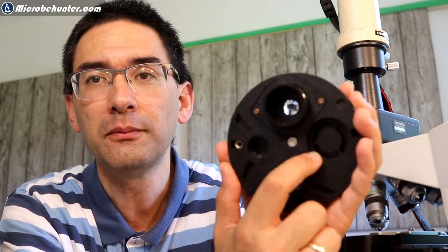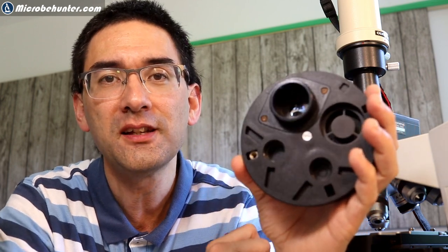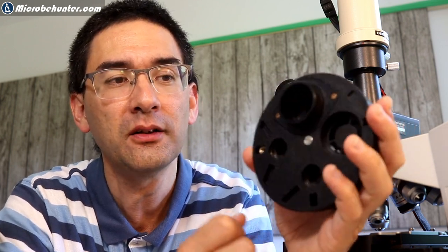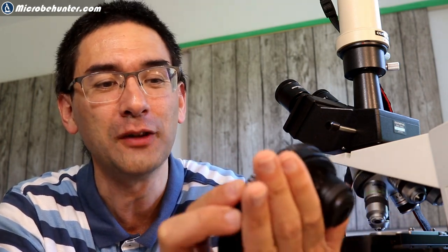I have a dark field patch stop here and I've got two phase annuli. So these two things here are for the 10 times and the 40 times phase contrast objective. Right now I only have the 10 times. I'm still waiting for the 40 times phase contrast objective to arrive.